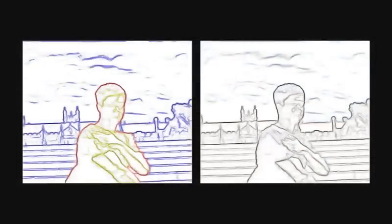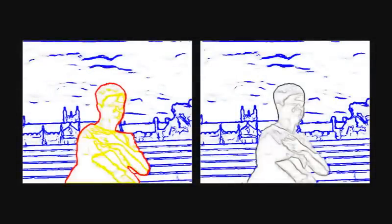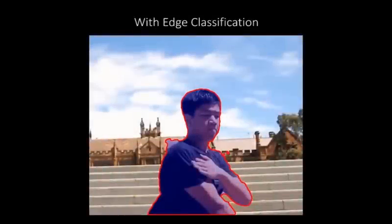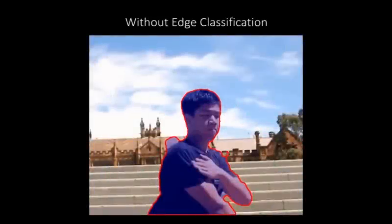Another key component of our method is edge classification. Based on edge color and orientation, we classify edges into three classes: background edges, foreground edges, and silhouette edges. The classified silhouette edges are incorporated into a level-set method to obtain the final foreground mask contour. Without edge classification, the level-set may converge to false silhouette edges.